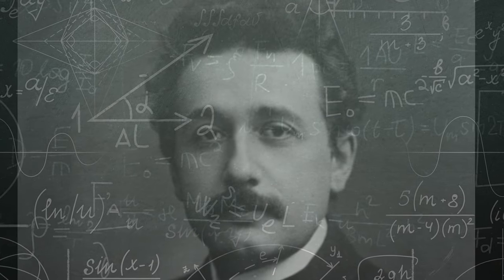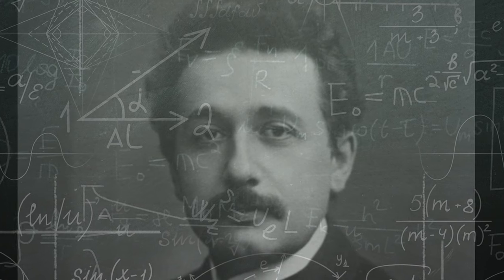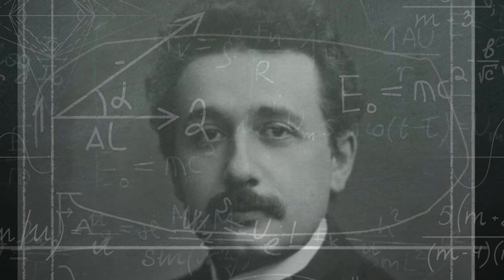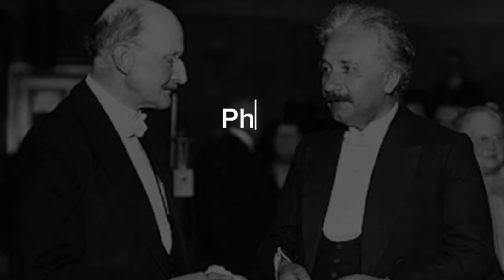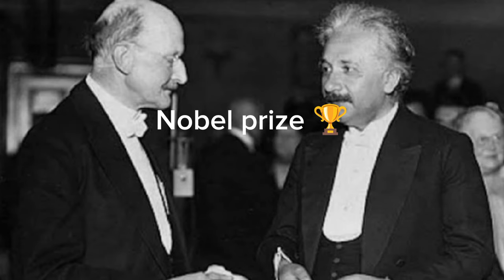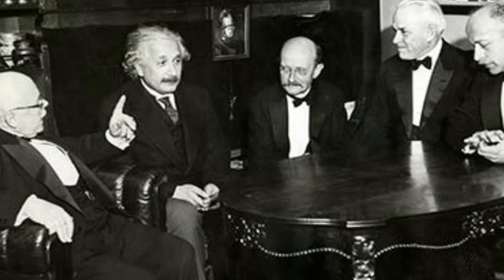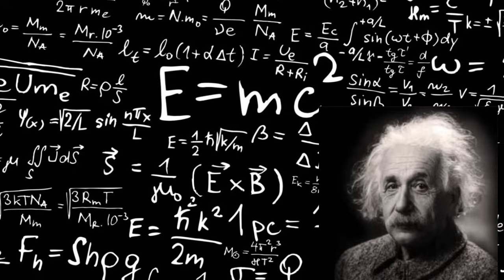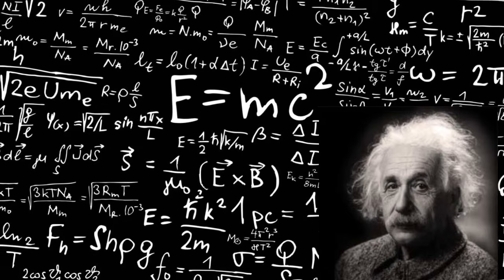When Albert Einstein was only 26 years old, he stunned the scientific community by publishing four separate research publications. As a result of this, he was awarded a PhD as well as the Nobel Prize for his significant contributions to the betterment of humanity. These ease formulated by Einstein are essential to the advancement of scientific knowledge.